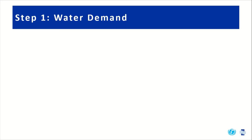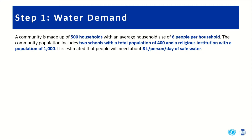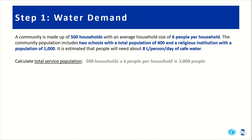Let's consider an example project. A community is made up of 500 households with an average household size of 6 people per household. The community population includes two schools with a total population of 400 and a religious institution with a population of 1,000. It is estimated that people will need about 8 liters per person per day of safe water. First, we'll calculate the total service population by multiplying 500 households times 6 people per household to get 3,000 people.